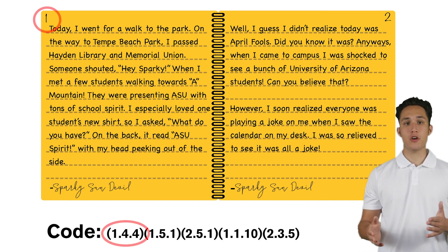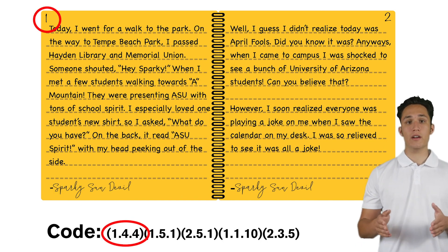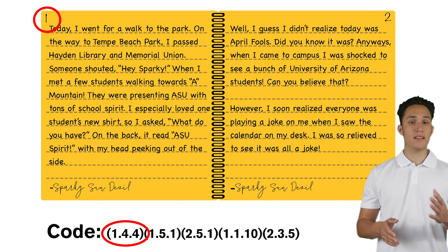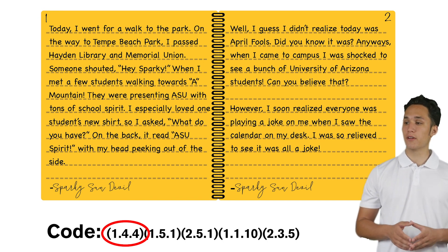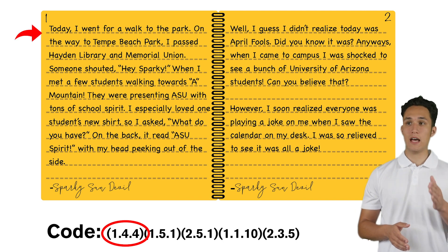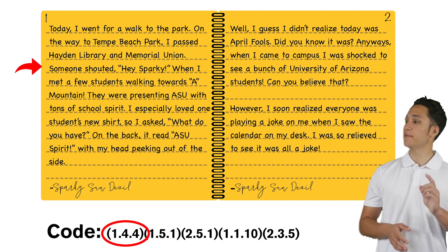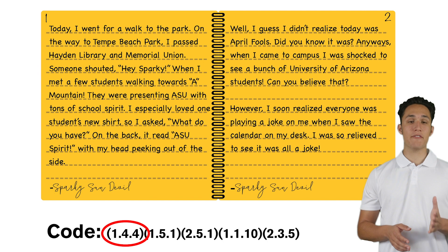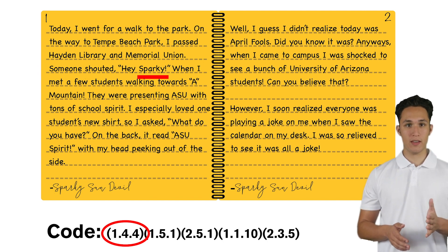Looking at the first code, we can see that the first number is 1. 1 is the page number. Next, let's look at the second number — the second number is the line number. So four lines down: 1, 2, 3, 4. Now the fourth word on the fourth line is Sparky.